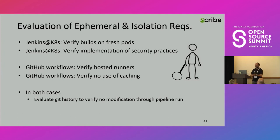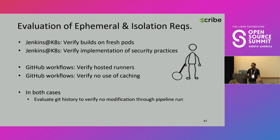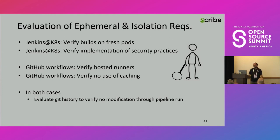So how would I go on evaluating it? I could verify that builds are done on fresh pods, which you can see in the Jenkins logs. On GitHub workflows, I would verify that I'm working on hosted runners — and once it's a hosted runner, GitHub promises it's a fresh machine. I would also need to verify implementation of our security practices, that no high-permission Docker containers are run on the build and so on. And I would need to make sure that no caching is used, since both GitHub and Jenkins have caching techniques.